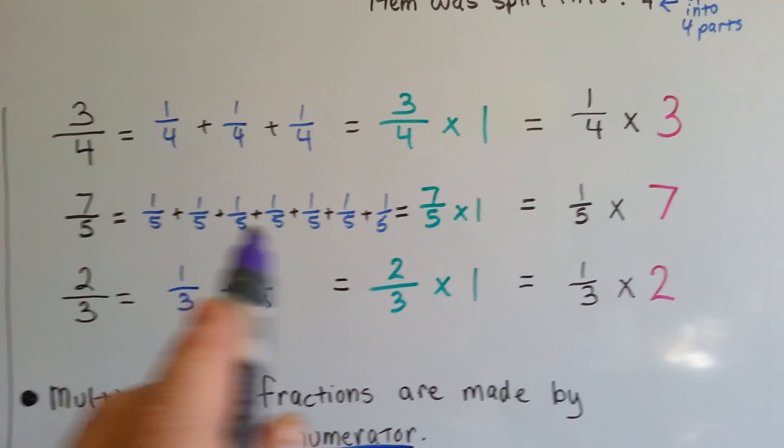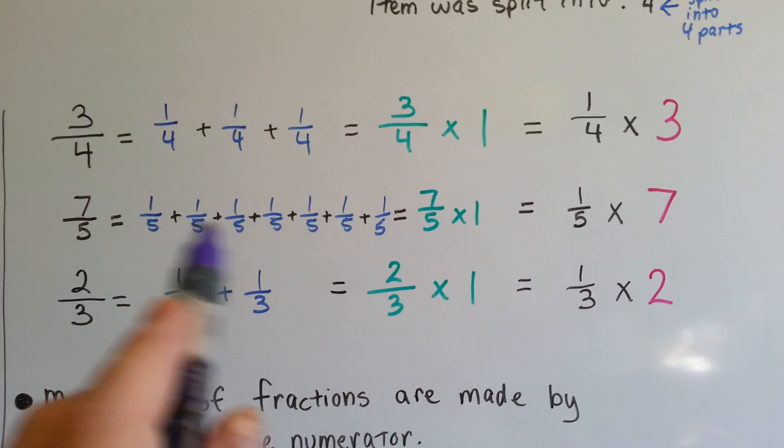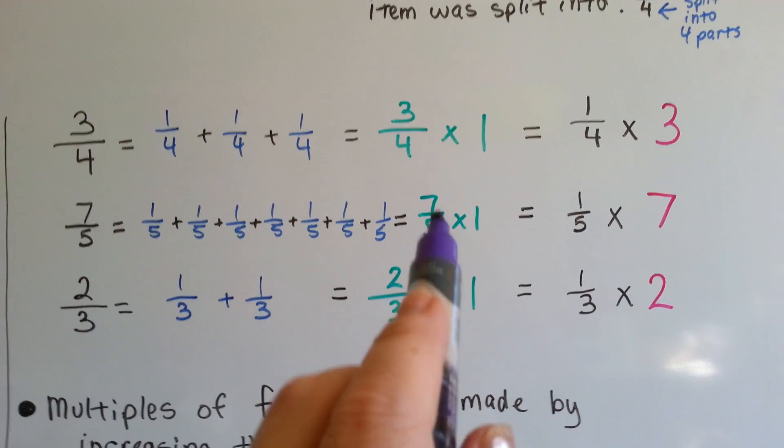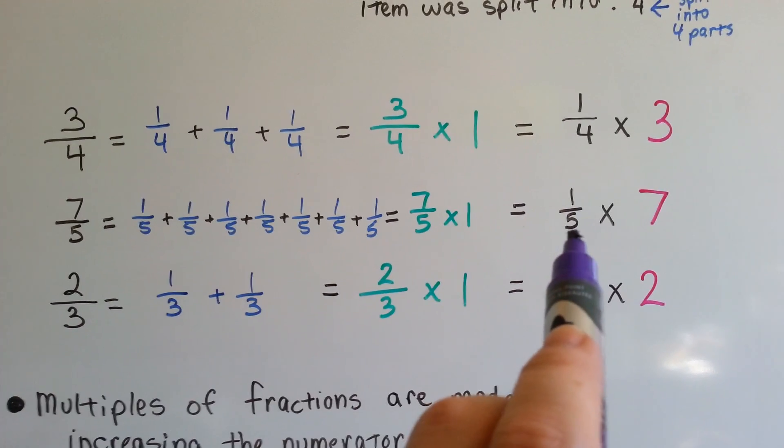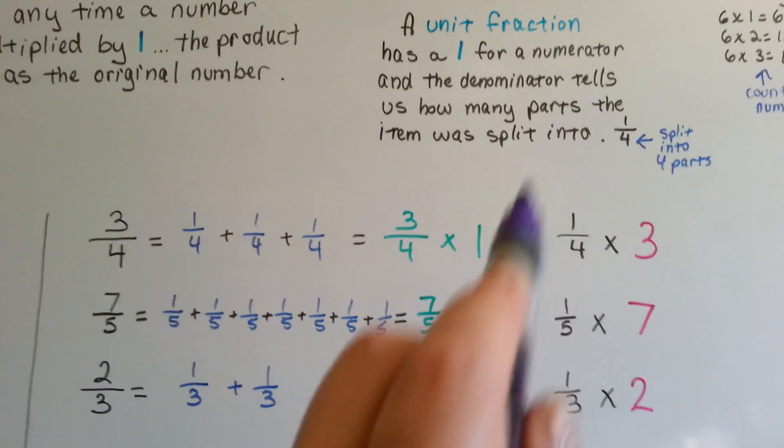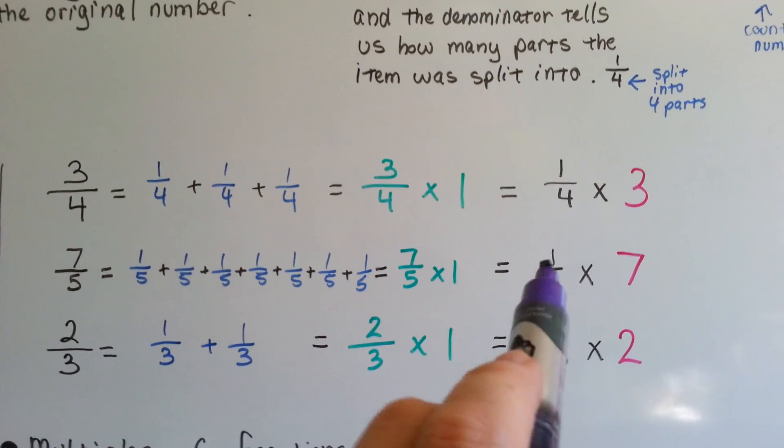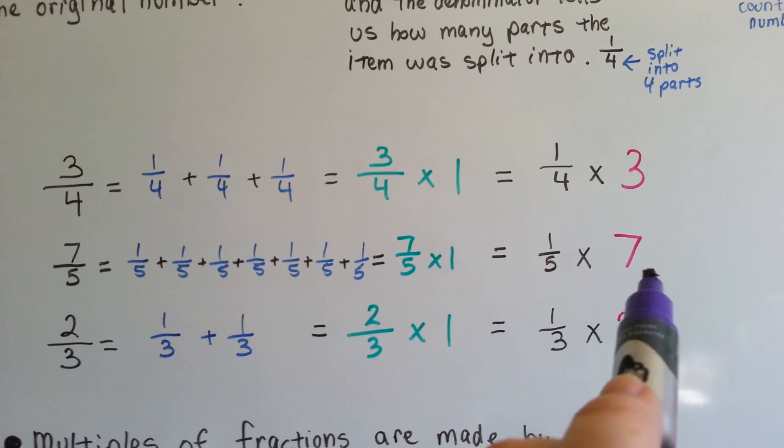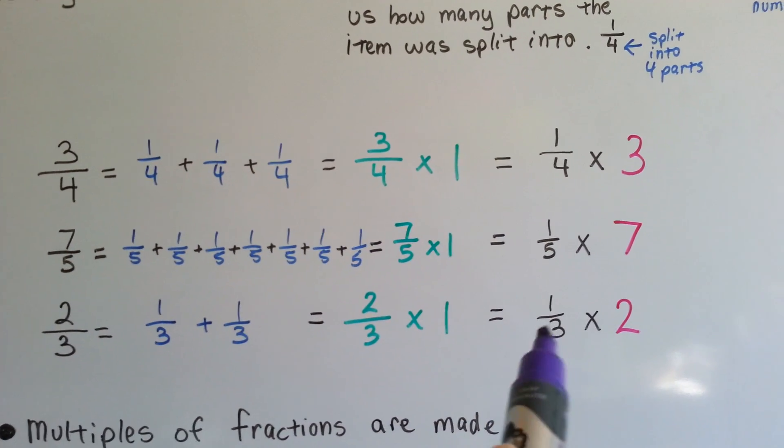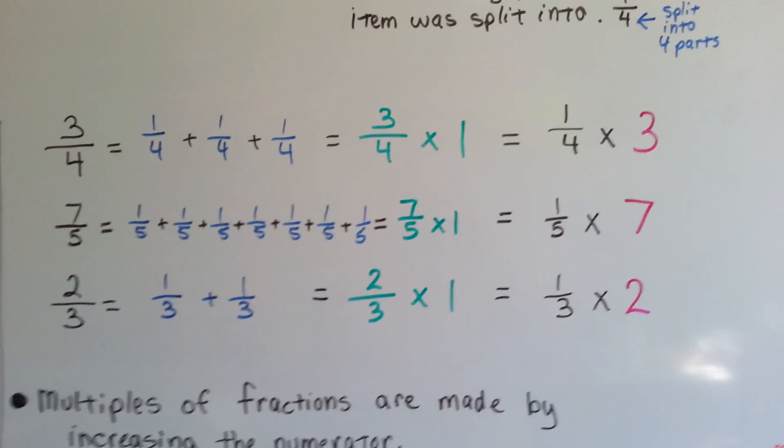We can do repeated addition. We can multiply it by 1 so it keeps its identity. Or we can split it into its unit fraction. Remember, unit fraction is 1 with a denominator. And then multiply it by a counting number that many times. 1 fifth, 7 times. 1 third, 2 times. 1 fourth, 3 times.